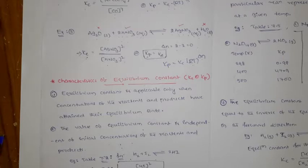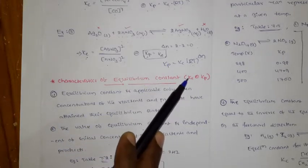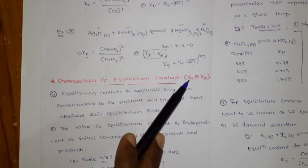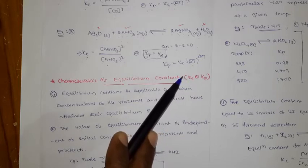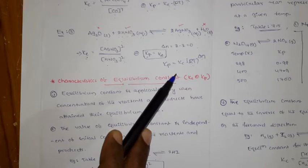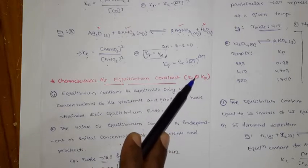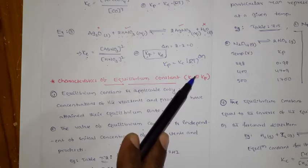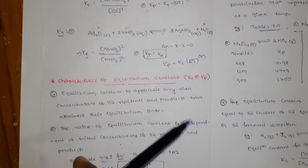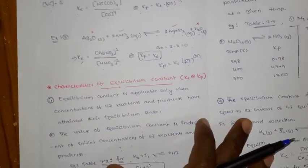What are the equilibrium constants? You have two types: Kc and Kp. Kc is nothing but the equilibrium constant expressed in molar concentrations. And Kp is nothing but the equilibrium constant expressed in partial pressures. Now we can see a few characteristics of these.